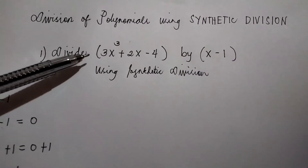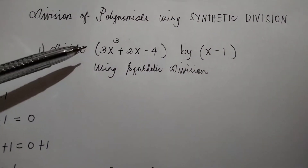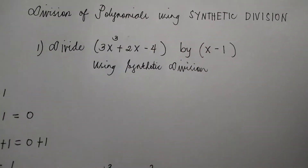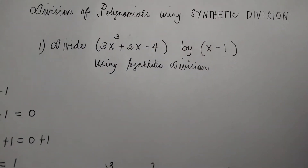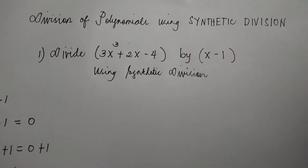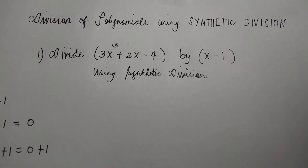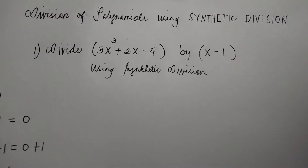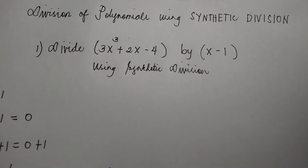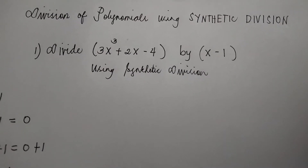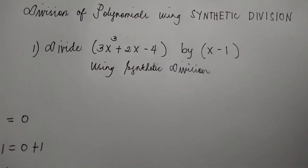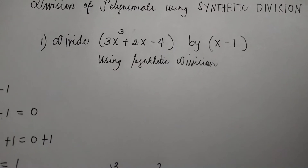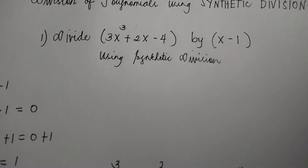So 3x cubed plus 2x minus 4 is the dividend and x minus 1 is the divisor. First, write the dividend in standard form and insert zeros as coefficients of any missing term. Both dividend and divisor must be in standard form.